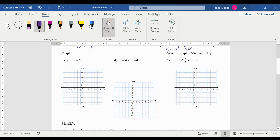Graph. This is slope-intercept form, so I'm going to write it as a slope, 1 over 1, so I'm going to start at 3. I'm going to go up 1 over 1, make a few points. There's my line.